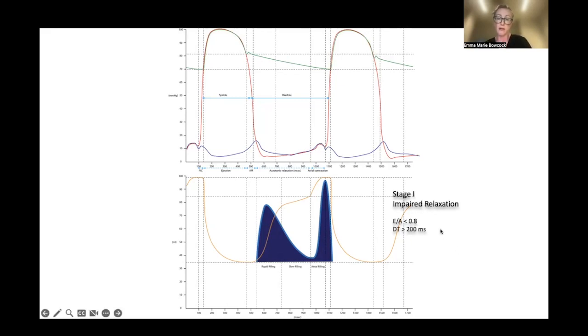This is the physiological explanation for why we see the E to A ratio go down to less than 0.8, and we usually find the decel time in these patients increases beyond normal, beyond about 200 milliseconds. These are not hard and fast numbers, just ballparks.